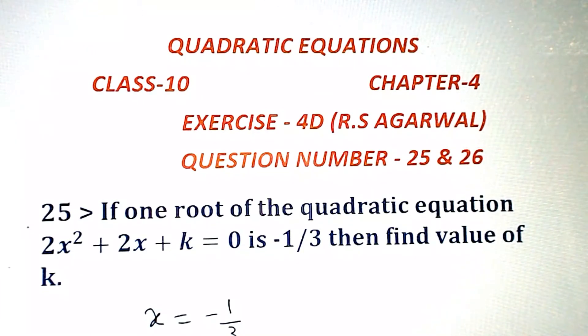If one root of the quadratic equation 2x square plus 2x plus k equals 0 is minus 1 by 3, find the value of k.